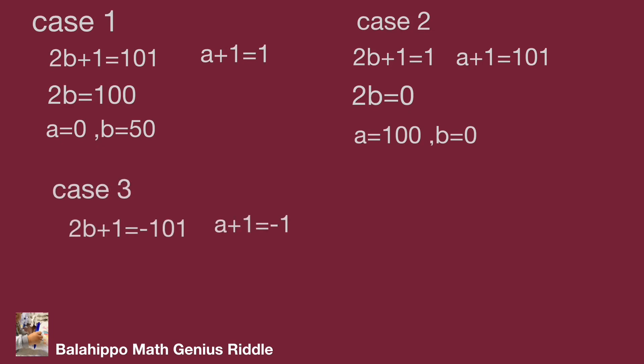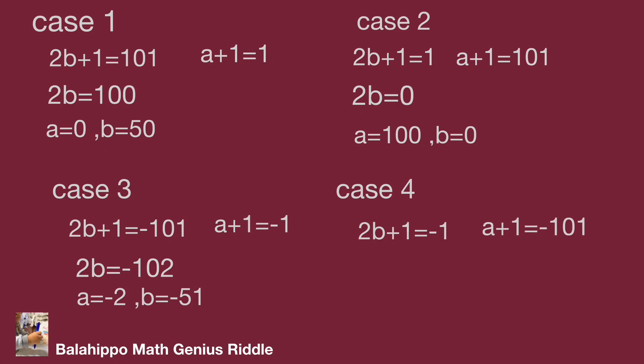In case 3, we get a equal to minus 2 and b equal to minus 51. In case 4, we check it again and get a equal to minus 102 and b equal to minus 1. We have found all the answers. Did you figure it out? Hope you enjoyed the video. Thank you.